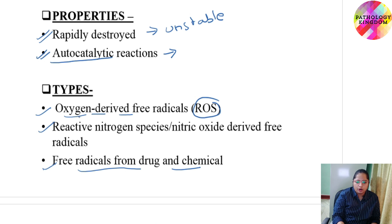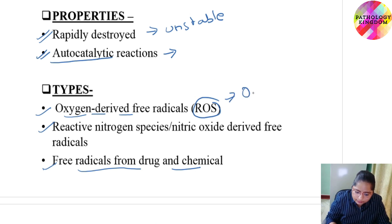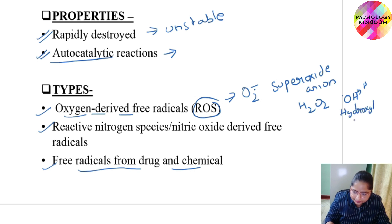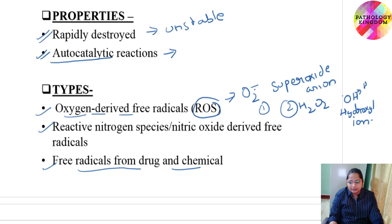Coming on to the oxygen-derived free radicals, the examples are: superoxide anion, H2O2 that is hydrogen peroxide, and OH that is the hydroxyl radical or ion. These are the examples of oxygen-derived free radicals, that is reactive oxygen species.